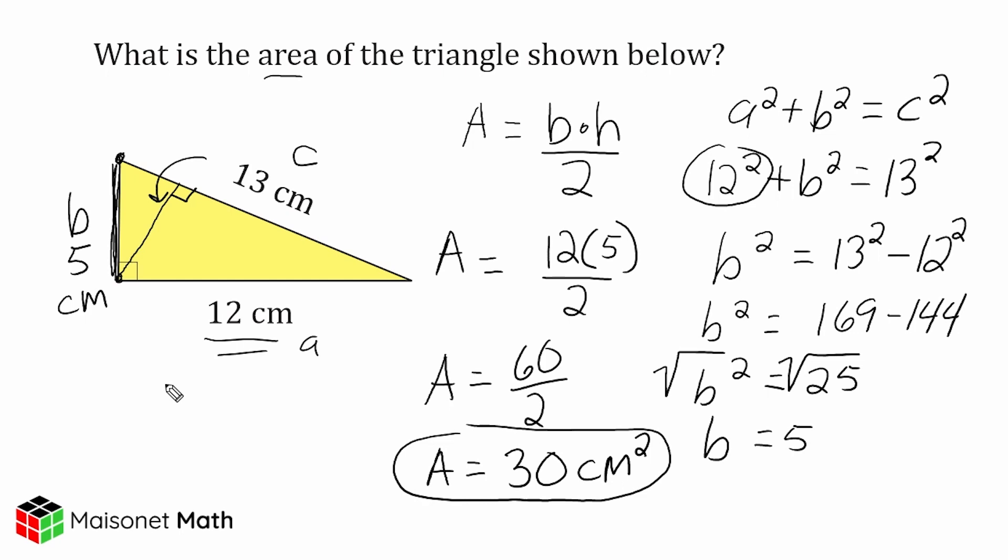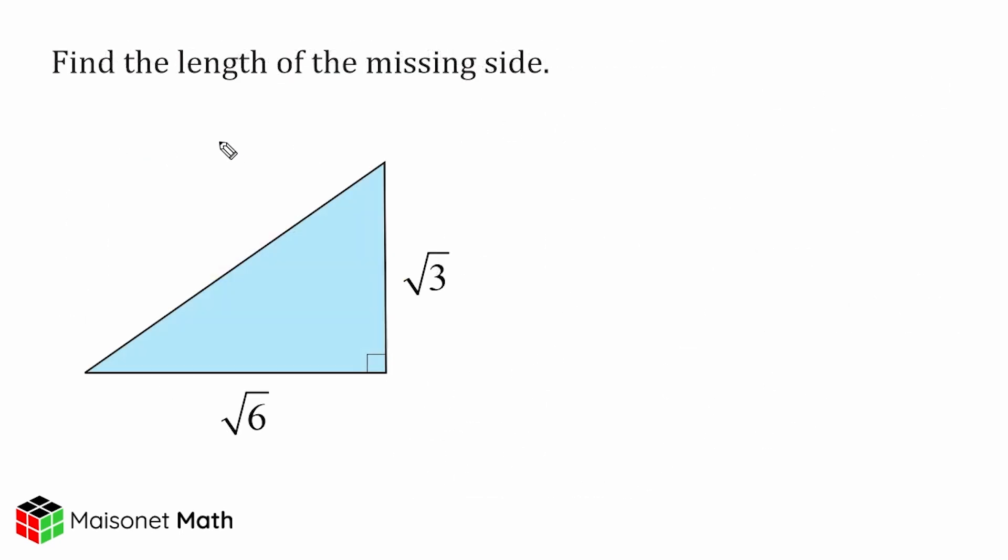All right, let's go ahead and do one more example. For this problem we have to find the length of our missing side, which is clearly a hypotenuse because it is located opposite of our right angle. So let's go ahead and do this.